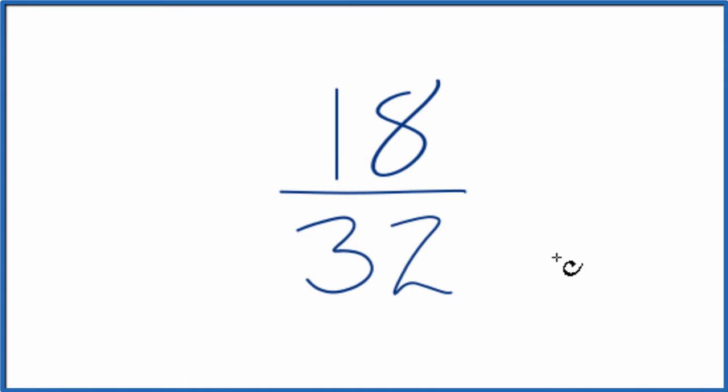To do that, we need to find a common factor, something that goes into 18 and 32. So here are the factors for 18 and 32.